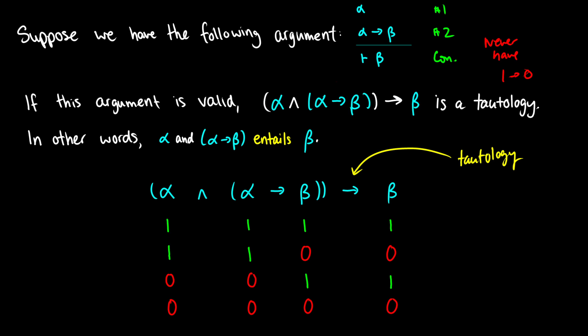Let's do our truth tables. Alpha arrow beta is true in rows one, three, and four — one arrow one, zero arrow one, zero arrow zero — and false in row two: one arrow zero. For the AND, we take information from alpha and from alpha arrow beta, so both have to be true. Row one: one and one, true. Row two: one and zero, false. Rows three and four: zero and one, false.